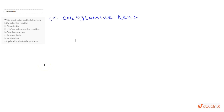In this question we have to write short notes on the following reactions. The first one is the carbylamine reaction. It is basically a test to identify whether the amine is a primary amine or not. This reaction cannot be used to distinguish between secondary and tertiary amines, but if the reaction proceeds, it is confirmed that it is a primary amine.